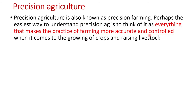Different people and different organizations define precision agriculture in different ways. Precision agriculture is also known as precision farming. The easiest way to understand it is to think about everything — machines, technology, knowledge, skills, and all kinds of tools that we use in farming — that makes our farming practice more accurate and more controlled. Once our farming practice is more accurate and more controlled, that is called precision agriculture.